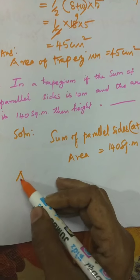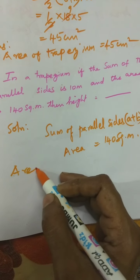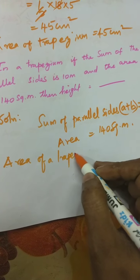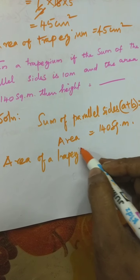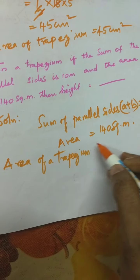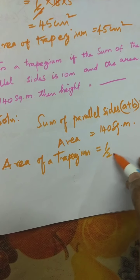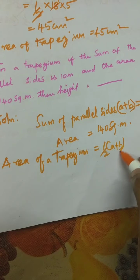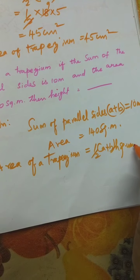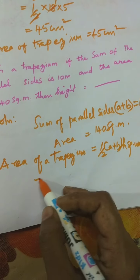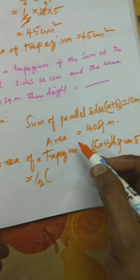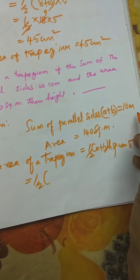So you write the formula first. Area of a trapezium is equal to half into A plus B into H square units. Then, half into A plus B — we know that is 10 meter — into H, which we don't know. Area is 140 square meter.